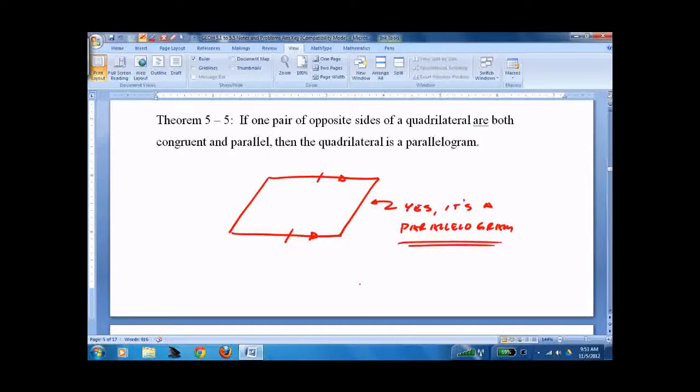And that one seems a little counterintuitive, but if you do this. Think about alternate interior angles. You're looking at side angle side. Therefore, you know you have two congruent triangles. Therefore, you know you have a parallelogram.